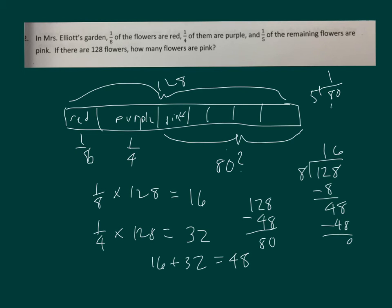1 times 5 is 5. 8 minus 5 is 3. Bring down the 0. 6. 6 times 5 is 30. So 1/5 of 80 is 16. How many flowers are pink? 16 flowers are pink.